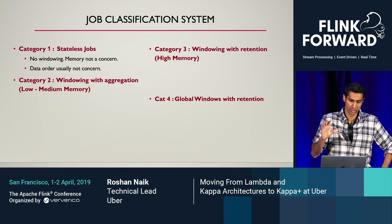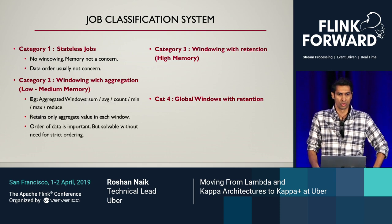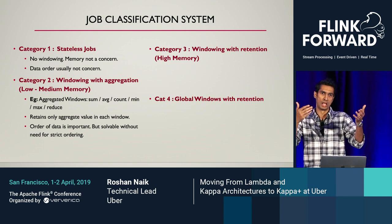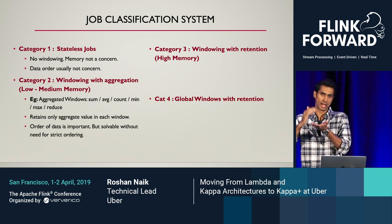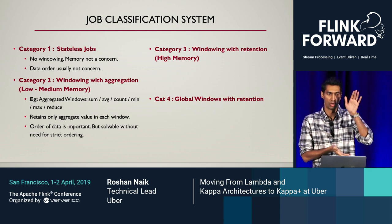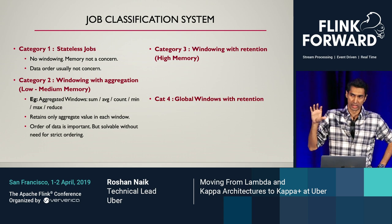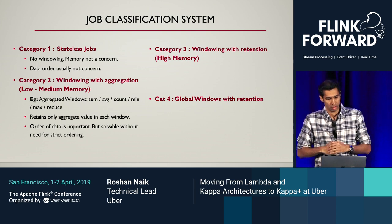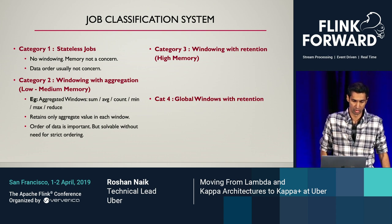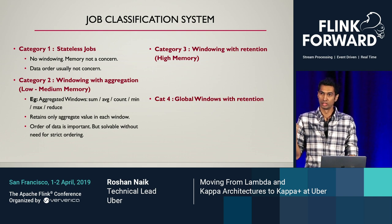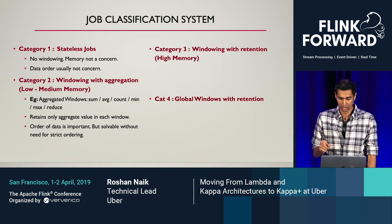The meat of the problem comes to categories two, three, and four, which are stateful jobs. Category two is windowing with aggregation: as data comes in as records, you calculate the incremental aggregate value and store just that in your window — not all the records. Your memory footprint is decent but not huge. You're doing things like sum, average, count. The order of data is important here, but the key insight is it can be solved without strict ordering.